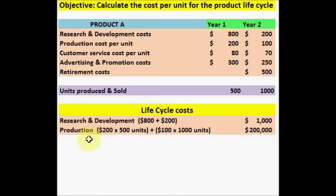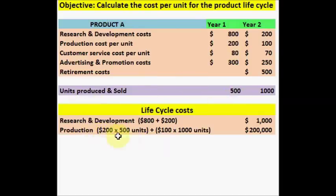Next step is to calculate the production cost. In the exercise, we have been given that the production cost is based on per unit. So what we are going to be doing is take the year 1 production cost per unit and multiply it with the units produced and sold for both years. So the production cost is 200 cost times 500 units, plus the unit cost for year 2 is 100 dollars per unit, so 100 times 1000 units, equals a total production cost of 200,000.